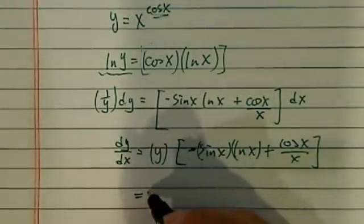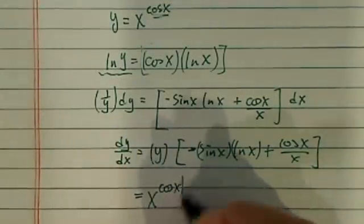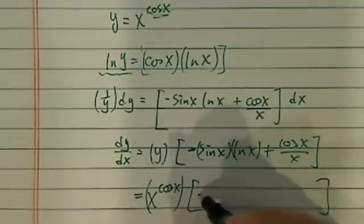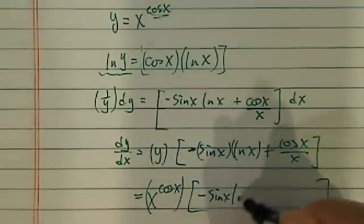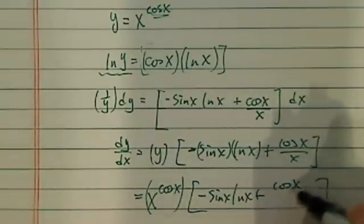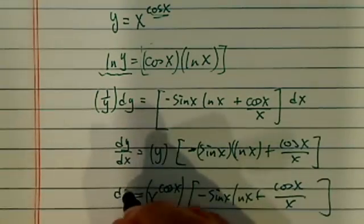And what is y? y is x to the cosine of x. We'll substitute it back in here. So dy over dx equals x to the cosine x times the bracket minus sine x times natural log of x, plus cosine of x over x. That's dy over dx.